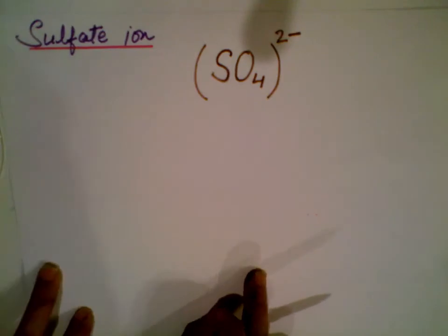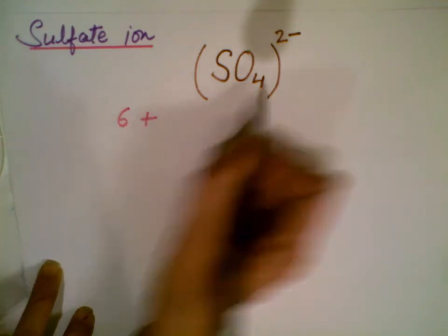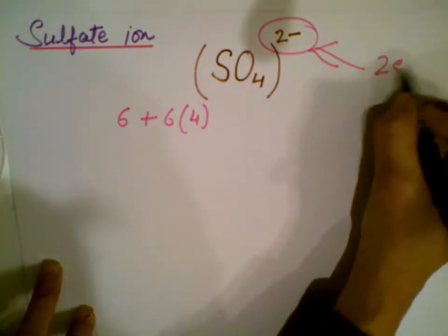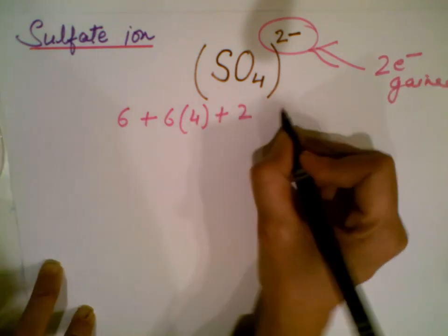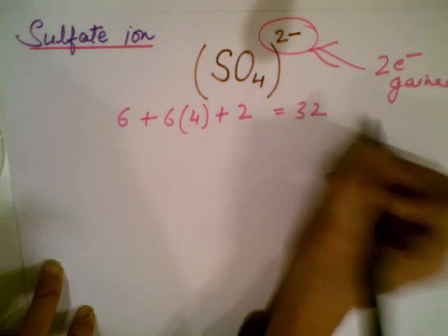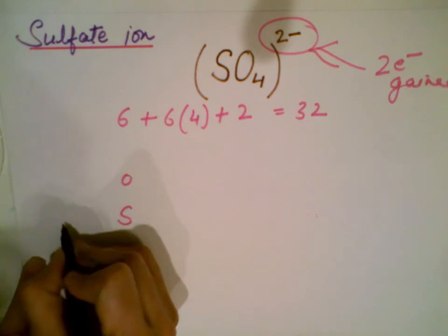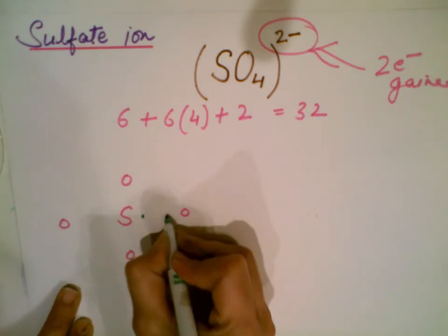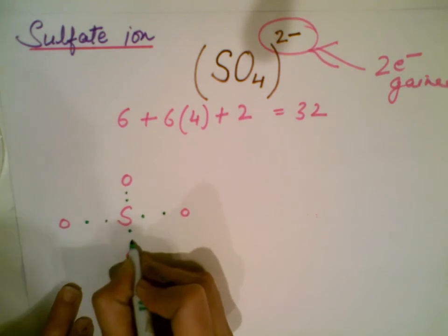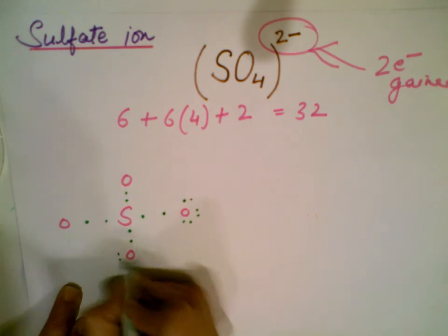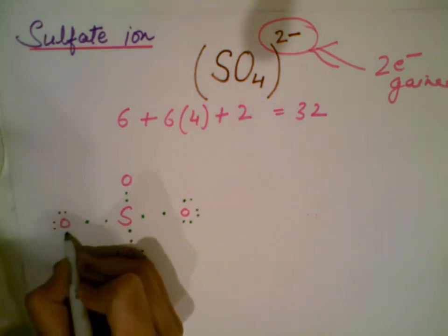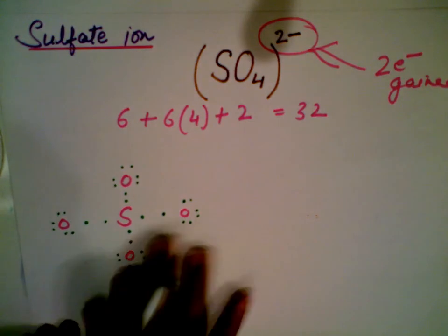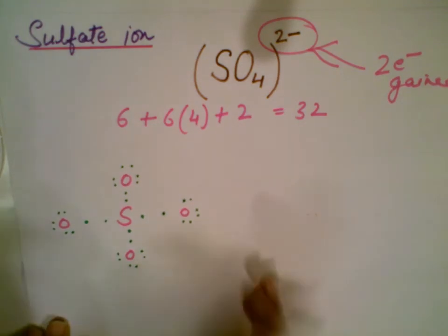Now let's do the sulfate ion, SO4 two-minus. Sulfur has six valence electrons, and oxygen has six multiplied by four atoms. The two-minus charge means two electrons are gained, so you add two more. The total comes to 32 electrons. We distribute these 32 electrons among five atoms — one sulfur and four oxygens — making sure the octet of each atom is completed.